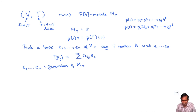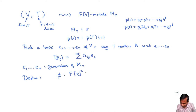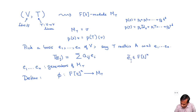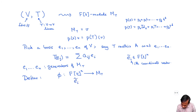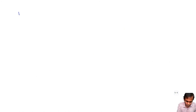Accordingly, we define phi from F[T]^n to M_T by taking the i-th coordinate vector E_i tilde in F[T]^n — which is the constant polynomial 1 in the i-th place and zeros elsewhere — to the i-th generator E_i of M_T. The question is: what is the kernel of phi? The theorem I will prove now is that the kernel of phi is the column space of the matrix T*I - A.